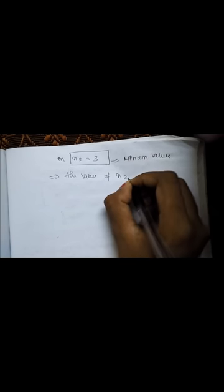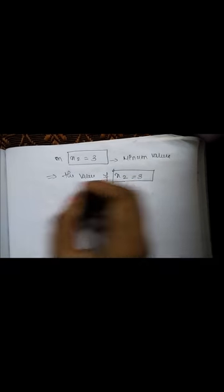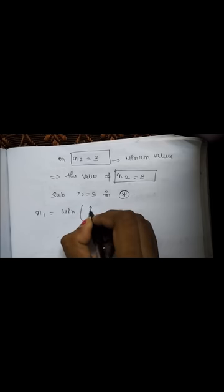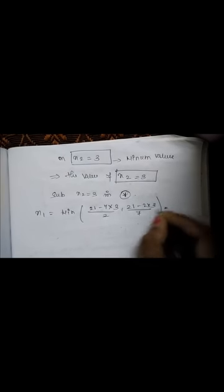On x2 equals 3 we get the minimum value, which implies x2 equals 3. Now substituting x2 equals 3 into the star equation: x1 equals min of [(21 minus 7 times 3)/2, (21 minus 2 times 3)/7], which gives 0. So x1 equals 0.